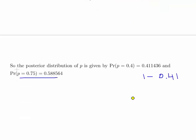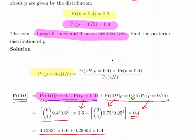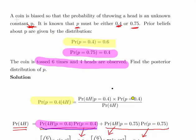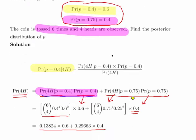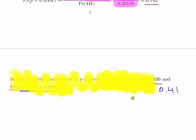With some extra decimal places, the posterior distribution of p is: the probability that p = 0.4 is approximately 41%, and the complement — the probability that p = 0.75 — is 0.588564. This sets up the notion of prior distributions and posterior distributions, where the posterior is the prior updated given the observed data.